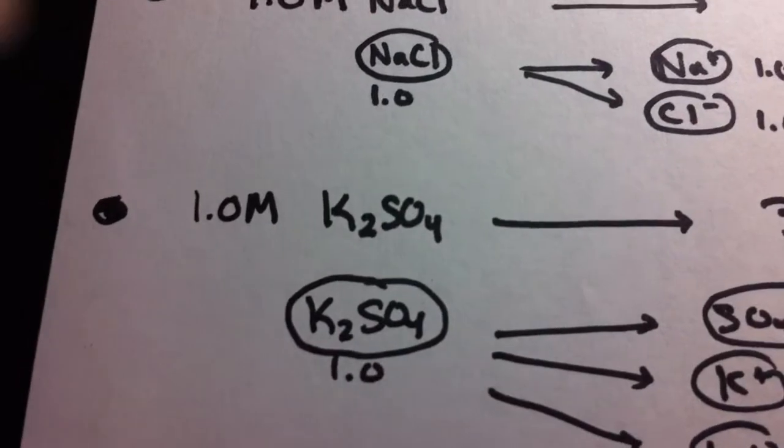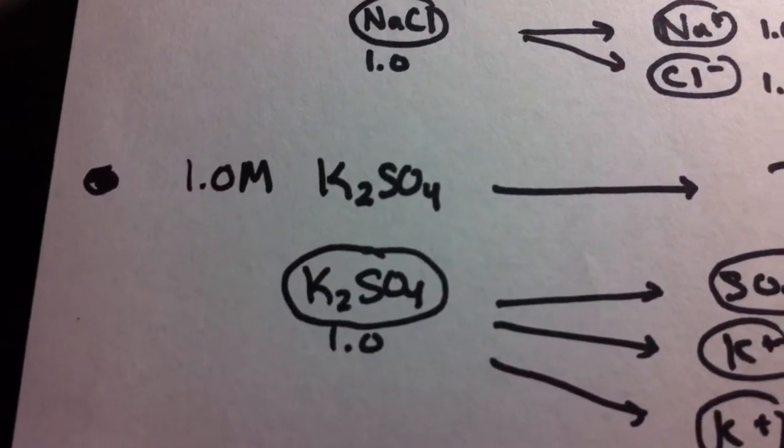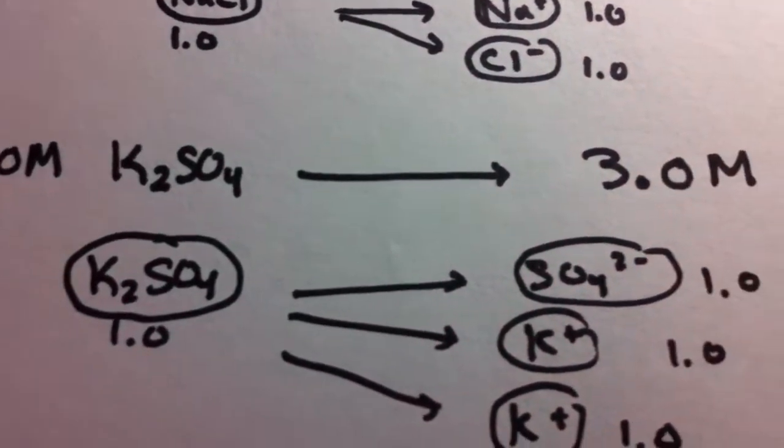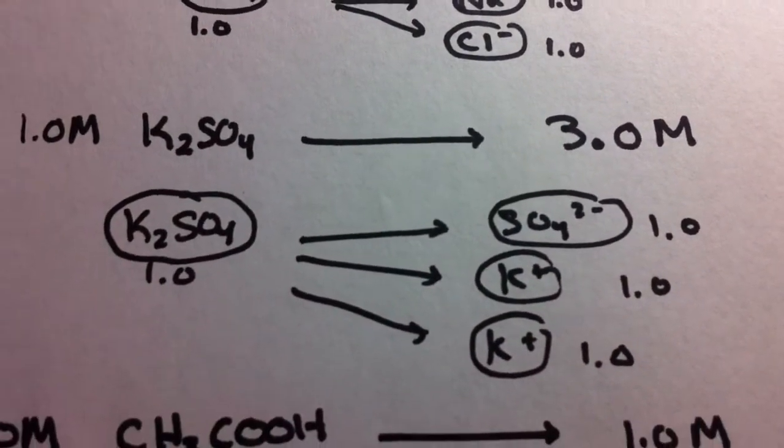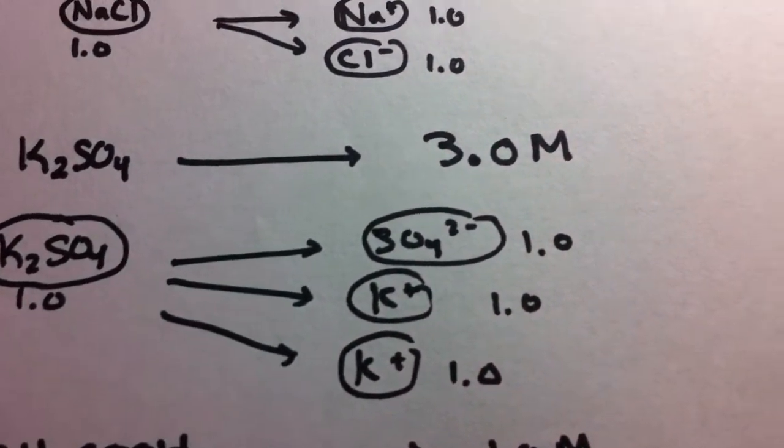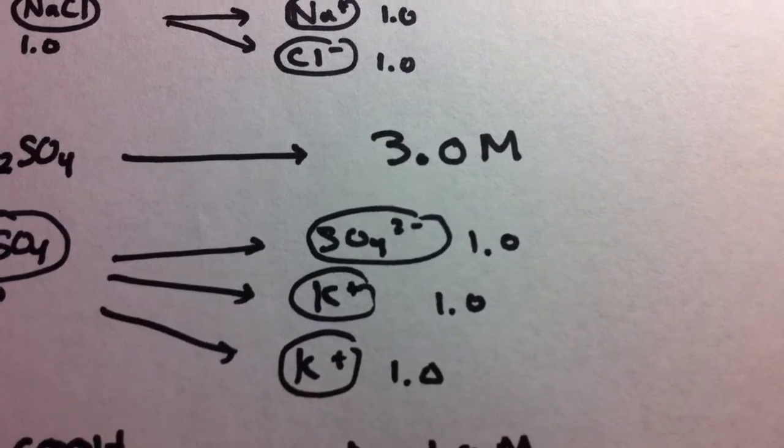If we want to talk about potassium sulfate, it's going to split up into three individual ions: sulfate and two potassium. Together, they're going to equal three molar.